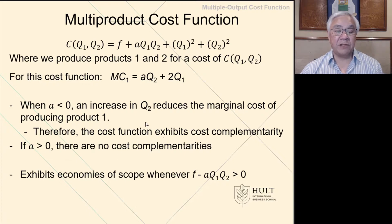The other aspect is we can also look at economies of scope. And that condition is where F minus AQ1Q2 is greater than 0. So if this term is true, then there is economies of scope between products 1 and product 2.